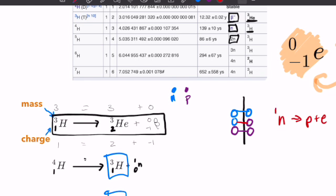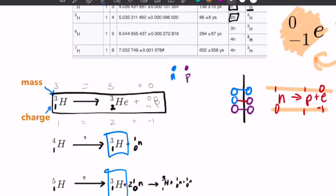A neutron is 1, 0. A proton is 1, 1. Electron is minus 1, 0. So if we look at the top numbers, we have 1 equals 1 plus 0. And on the bottom, we have 0 equals 1 minus 1. So it balances. So that's what's occurred in that reaction.